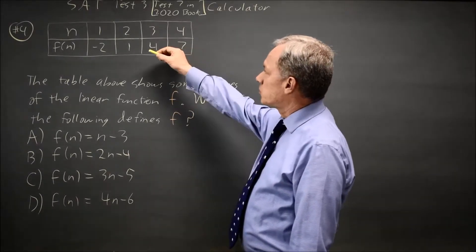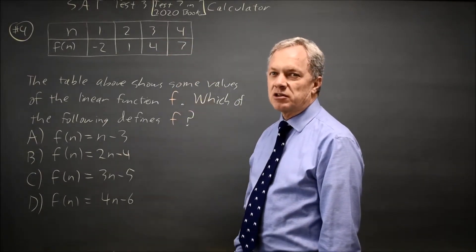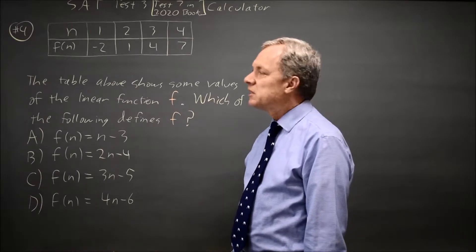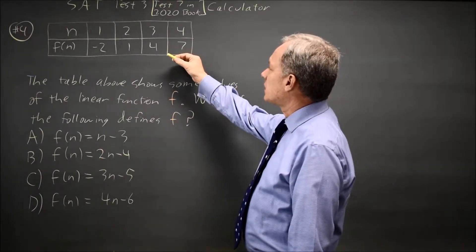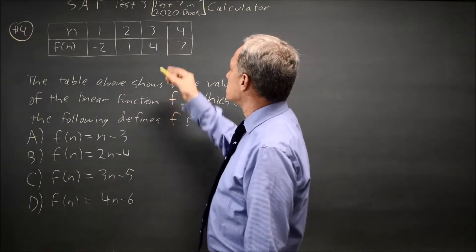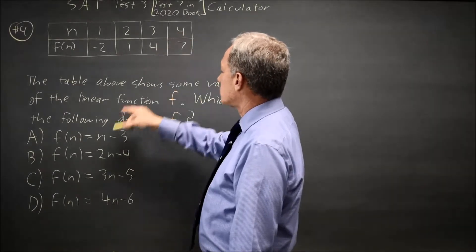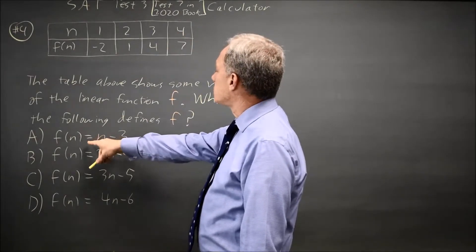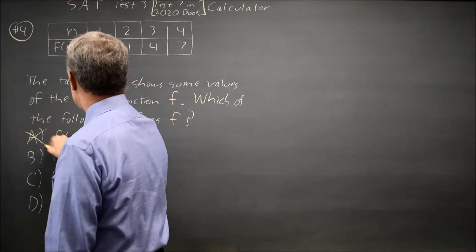One way of doing this is to plug in points. I'd like to plug in the last point because College Board expects you to start at the first point. So the last point is least likely to work in the most values. So I put n equals 4, 4 minus 3 is 1, which is not 7, so I know choice A is wrong.